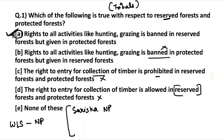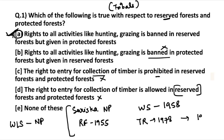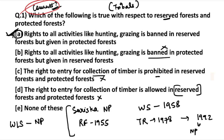Sariska National Park was first declared as a reserve forest in 1955, then upgraded to a wildlife sanctuary in 1958, next became a tiger reserve in 1978, and in 1992 it became a national park. It's important to understand how Sariska National Park was upgraded from a reserve forest to a national park. Tell me in the comment section below where Sariska National Park is located.